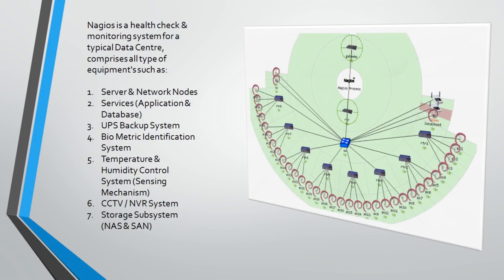Nagios is a health check and monitoring system for a typical data center and its nodes — storage, SAN, NAS — as well as temperature and humidity control. Certain embedded systems that OEMs have tie-ups with all major operating systems, and Nagios is one of them, used to monitor data center humidity and temperature.